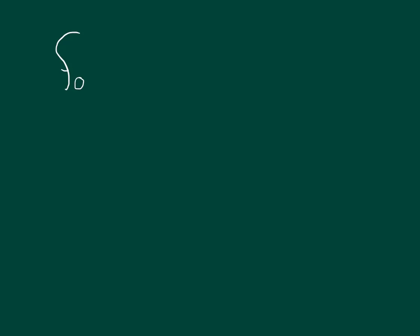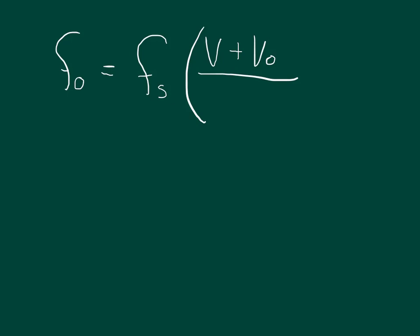In order to determine whether the bicyclist is ahead of or behind the car, we can use the Doppler effect. The frequency that the observer hears is equal to the frequency of the source multiplied by the velocity that sound travels plus the velocity of the observer, divided by the velocity that sound travels minus the velocity of the source.